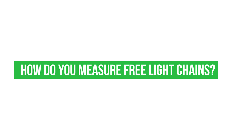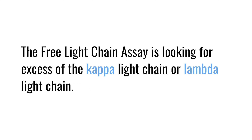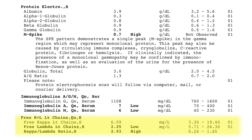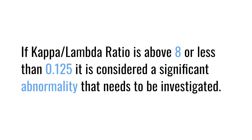When we measure free light chains, we're measuring chains that are unconnected to the heavy chain molecule, and we're looking for an excess of either kappa or lambda. A striking abnormality is indicated if the kappa-to-lambda ratio — normally around 0.6 to 1.7 depending on the lab — is above 8 or below 0.125, which most people consider a significant abnormality that should be investigated.